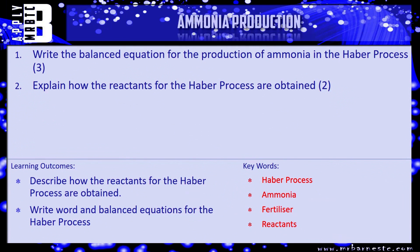That's all you need to know from this video, so let's have a look at the type of questions you can get based on it. The two questions are: number one, write the balanced equation for the production of ammonia in the Haber process — you don't need to know what the Haber process is just yet, that's going to come up in a later video — and number two, explain how the reactants for the Haber process are obtained. Pause the video, have a go, and we'll see how you've done in a minute.